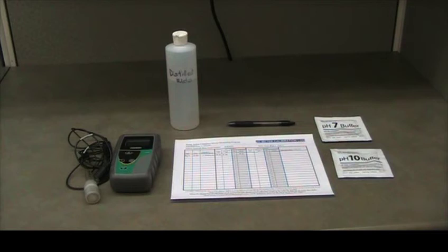you will need ACORN 5 plus pH meter, distilled water, pH 7 and pH 10 buffer solutions, pH meter calibration log, and a pen or pencil.